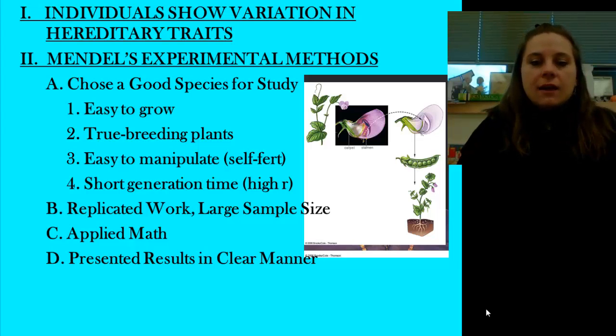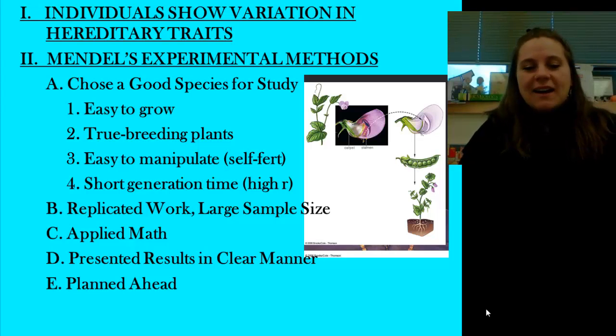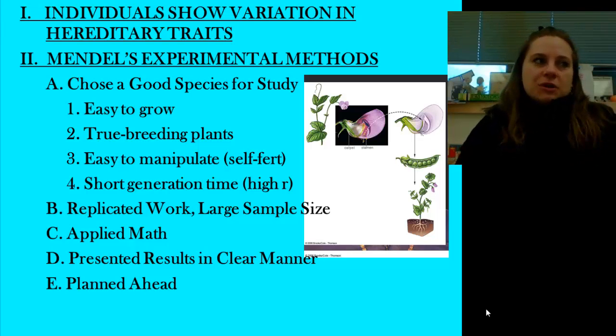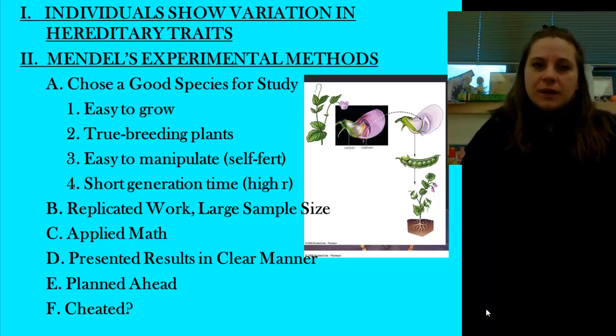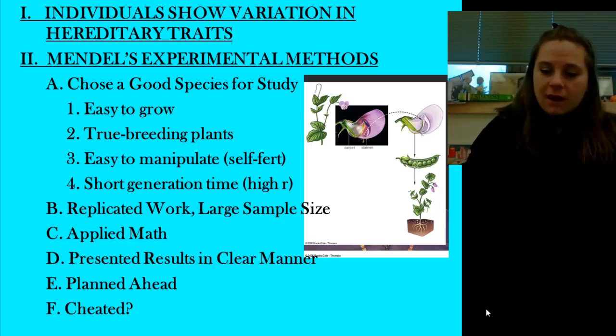Those results were then presented in a very clear manner. In some cases they were too good. As he planned ahead, as he looked at various traits, we look back on his data and we wonder, could he have cheated? It's come up a couple of times because some of his data is almost too perfect. But when we look at the traits that he looked at, the things that he gave us still hold true and we haven't found anything yet to really get in the way of that. A big deal about this particular podcast is going to be on lingo.